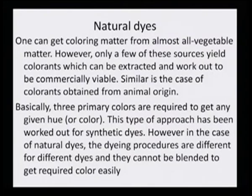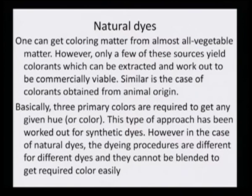If we try to look at natural dyes, one can get coloring matter from almost all vegetable matter. However, only a few of these sources yield colorants which can be extracted and work out to be commercially viable. Similarly, in the case of colorants obtained from animal origin, it is true that every colored substance in nature can yield color, but how it reacts with the material and whether it is available in substantial quantity makes the viability of that dye.